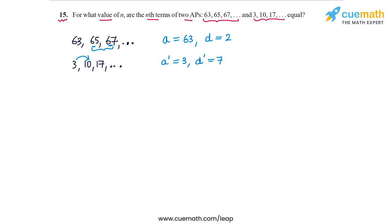Now we have to find the value of n for which the nth terms of the two APs are equal. So let's represent the nth term of the first AP by TN and of the second AP by TN dash. So let's write expressions for both of these. TN will be equal to A plus (n-1)D, and A will be equal to 63 and D will be equal to 2, so plus 2 times (n-1).